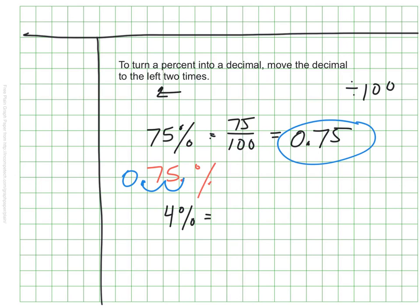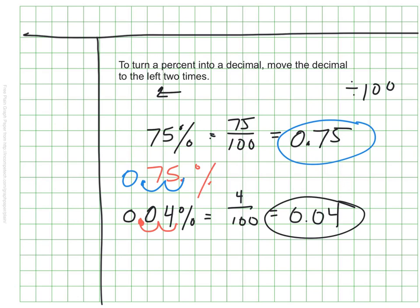4% would be 4 out of 100 — 4 hundredths — so I would write that as 0.04. There's an implied decimal right at the end of 4. I move it to the left and to the left again, placing a placeholder zero, and I end up with the same answer: 4 hundredths.